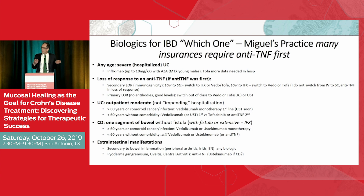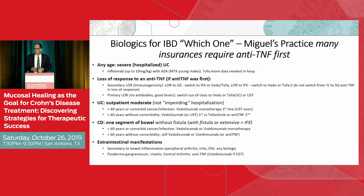However, for specific EIMs — pyoderma gangrenosum, uveitis, central arthritis — anti-TNFs have the most data, as our rheumatology, dermatology, and ophthalmology colleagues have shown. If a patient has one of these, I would probably reach for an anti-TNF. We wonder about ustekinumab for extra-intestinal manifestations. For primary sclerosing cholangitis, some early data suggested anti-integrins might help, but vedolizumab studies to date have not shown a benefit for PSC, and we haven't found any standard medications that work for it yet.